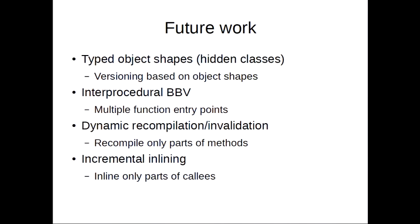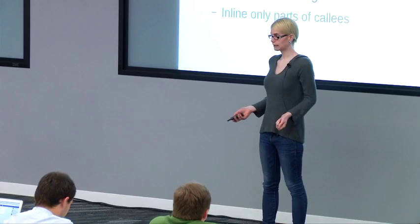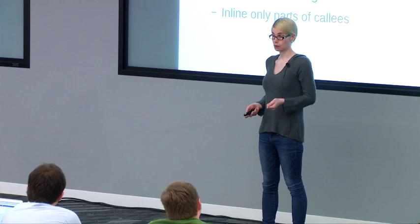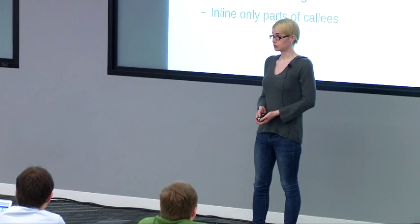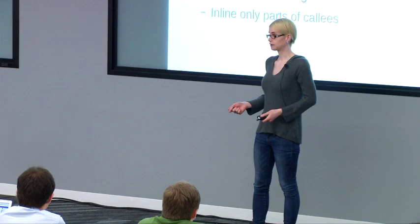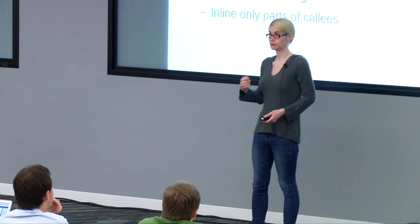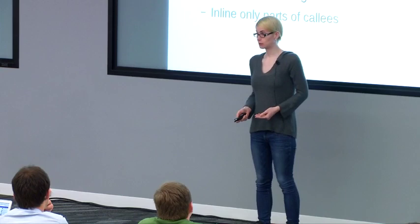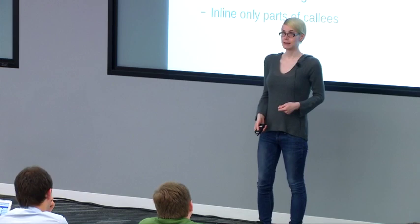Future work. There are many possible improvements to basic block versioning. One interesting thing would be to account for object property types. Right now I've shown only intraprocedural basic block versioning — it accounts for the types of local variables, but doesn't know anything about the types of the fields of objects. One very interesting avenue would be to have typed object shapes — basically hidden classes that try to account for the types of object properties. This would make basic block versioning a lot more powerful and allow much greater speedups. For example, it might be possible, if you have a call to method x.foo, to know exactly what function it's calling without having to look up the object field.